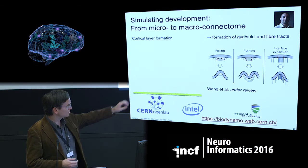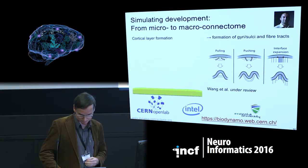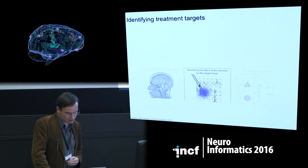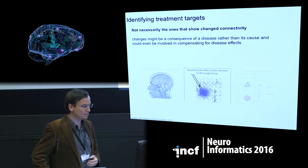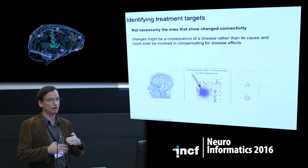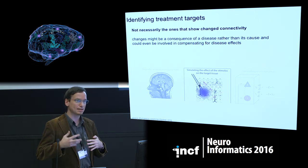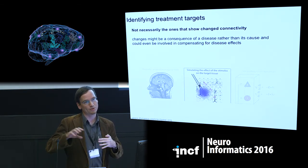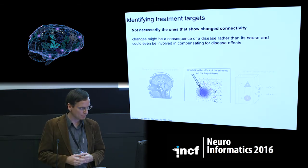We're at early stages of scaling up these simulations. The next step in treatment is identifying treatment targets, which are not necessarily the regions showing changed connectivity. A connectivity change might be an underlying cause of disease, but it might also be a consequence. Some changes might even be beneficial — compensating for lost function or reducing seizure likelihood — so we must find out which parts of the brain to target.